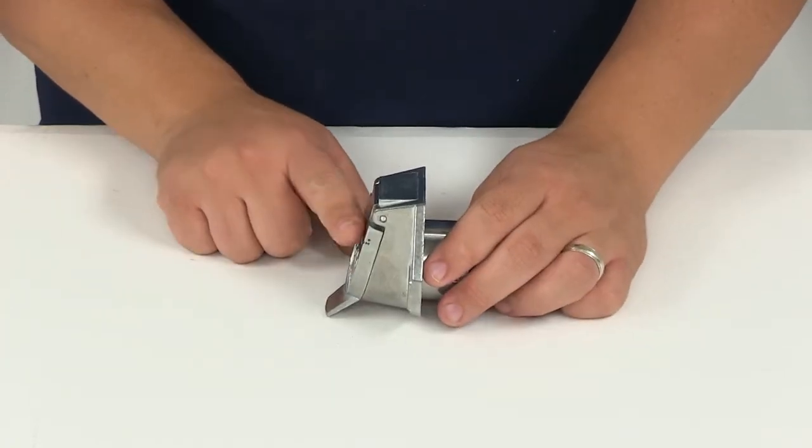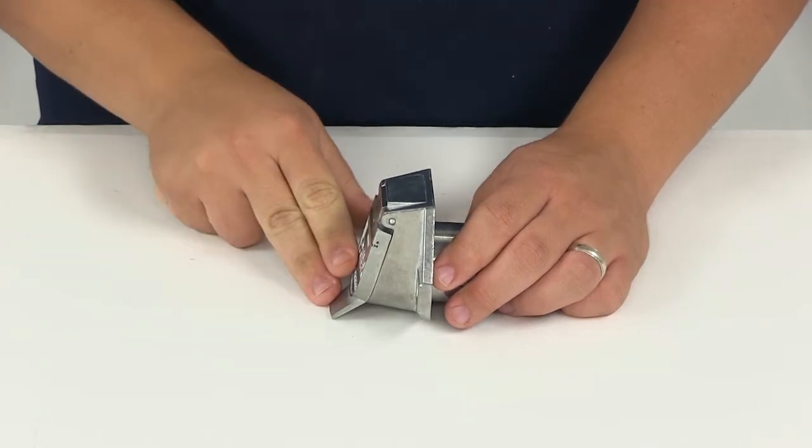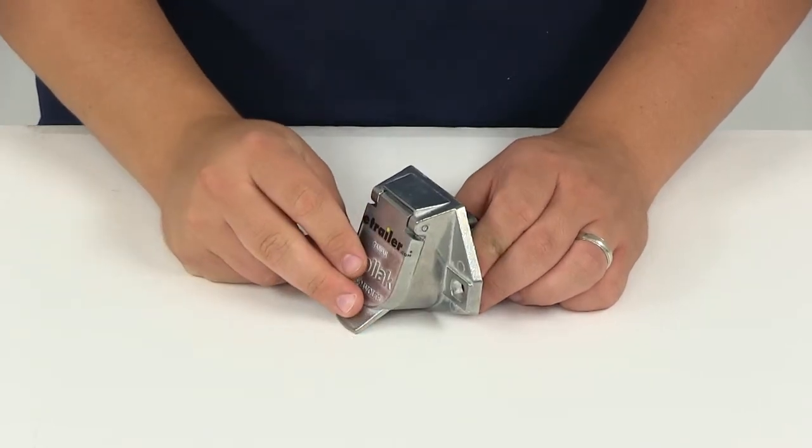When mounted, it's got a nice slant design so water will run off. It will prevent moisture from building up, especially inside the connection points.